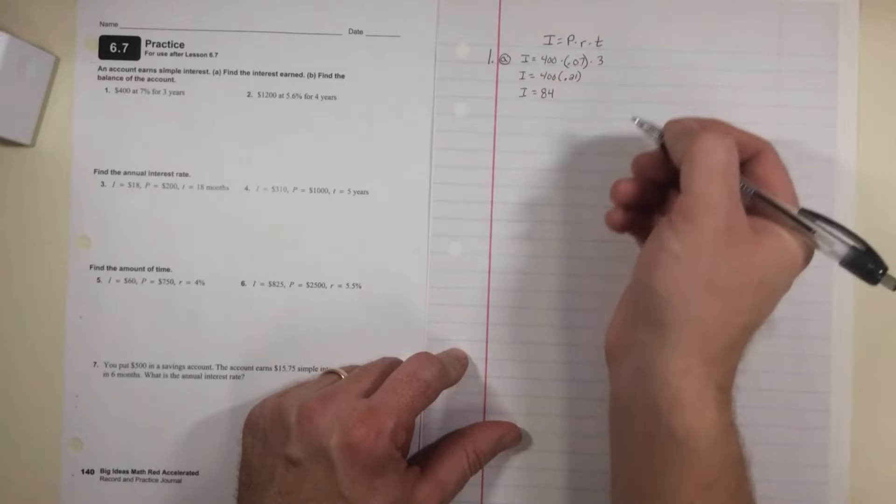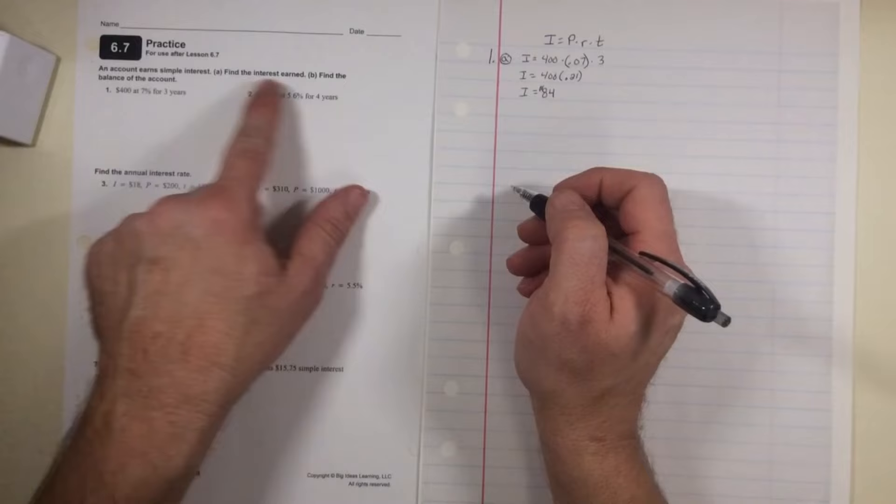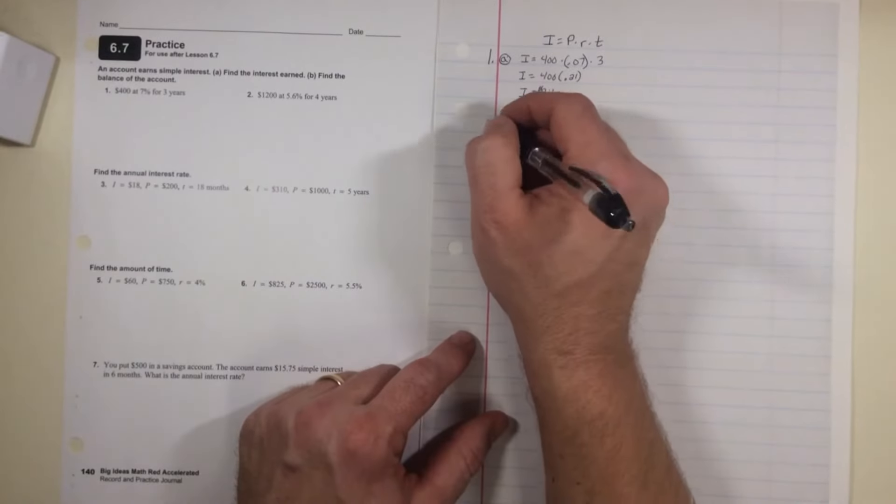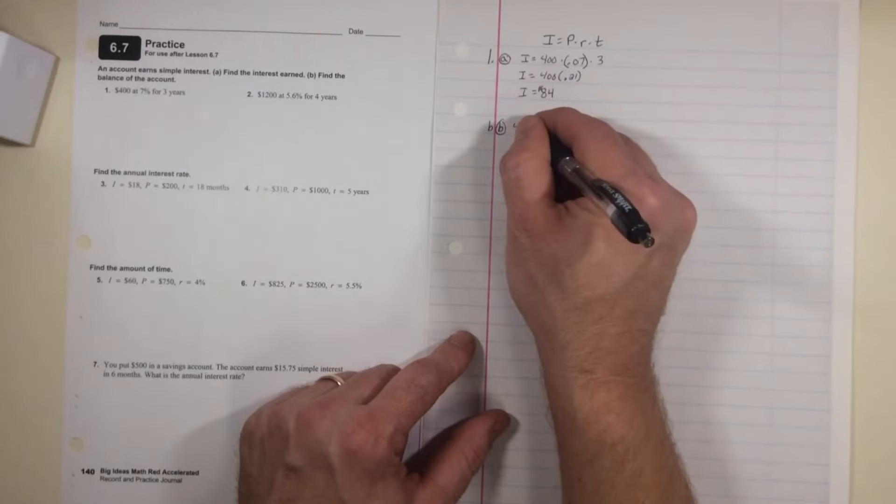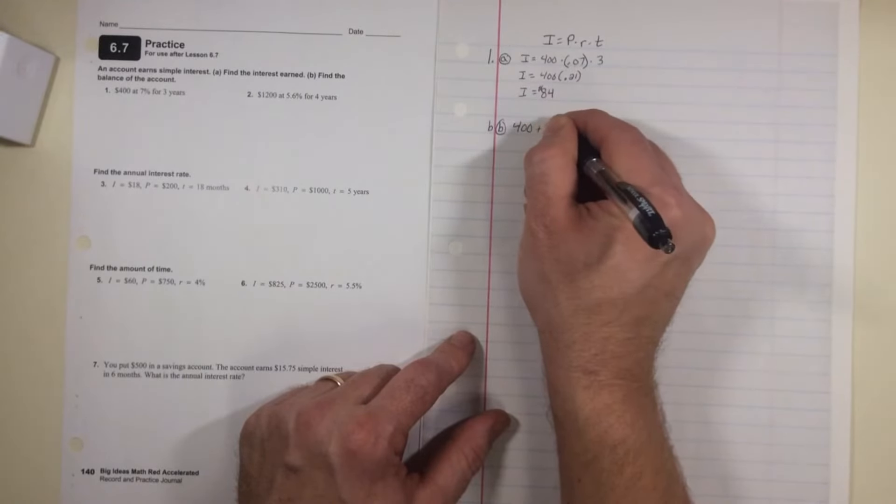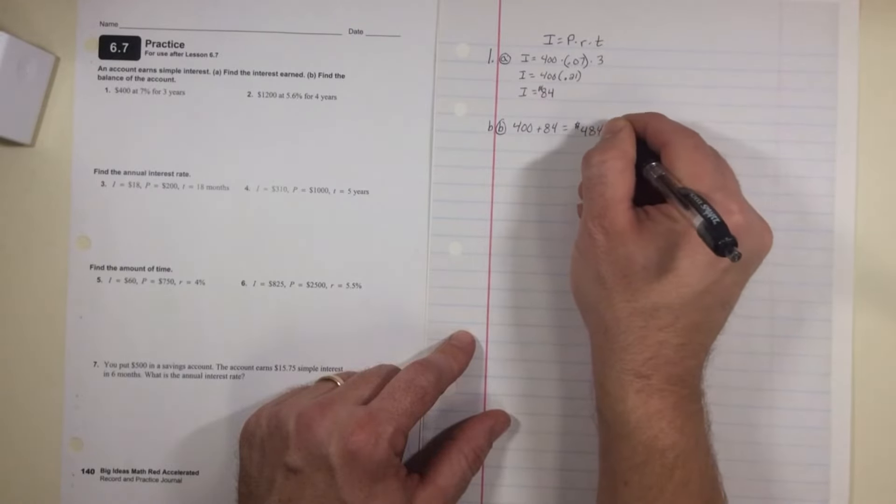So that's $84 interest. Part b says find the balance on the account. So now for part b, $400 is how much I put in, they added $84 dollars in interest, so now I'm at $484.